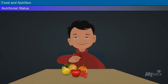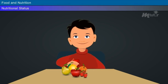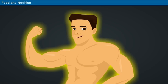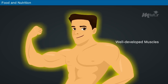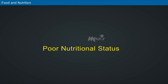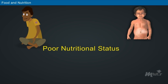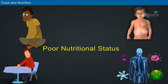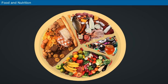Nutritional status is the state of our body as a result of the foods consumed and their use by the body. Good nutritional status is indicated by a well-developed body with normal weight and height, well-developed muscles, good appetite, and excellent general health. Poor nutritional status is evidenced by a poorly developed body, abnormal body weight, poor appetite, and susceptibility to infections.